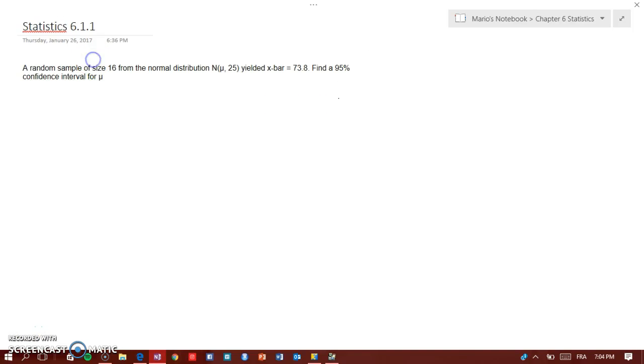Hey guys, here is a random sample of size 16 from the normal distribution given right here. It yielded x̄ equal to 73.8. For a 95% confidence interval, first the formula is x̄ plus or minus z(α/2) times σ over square root of n.